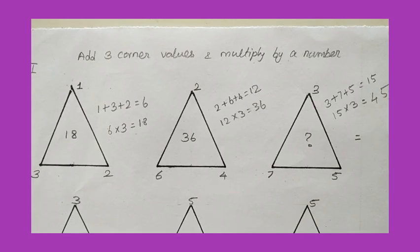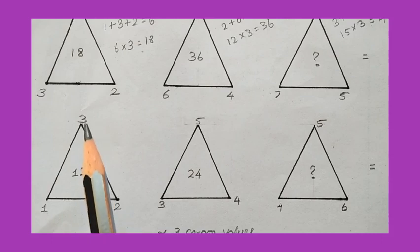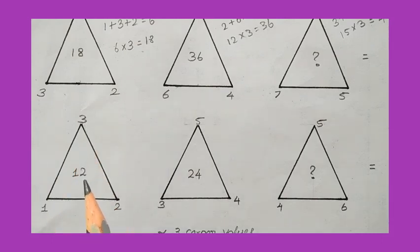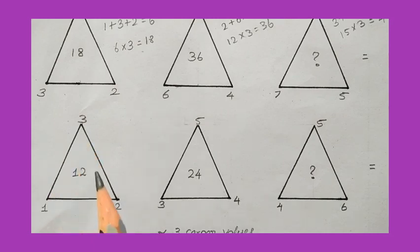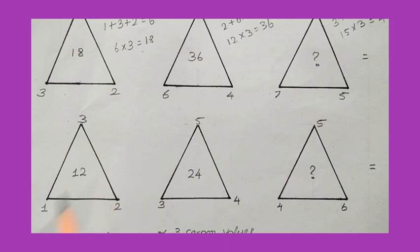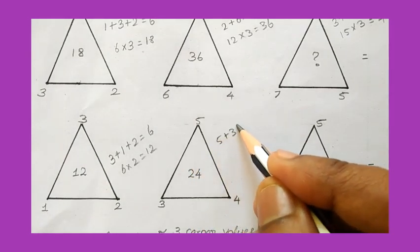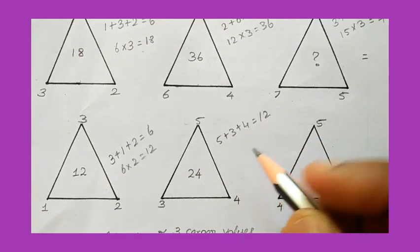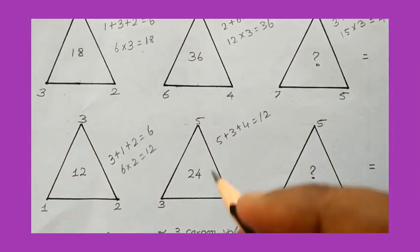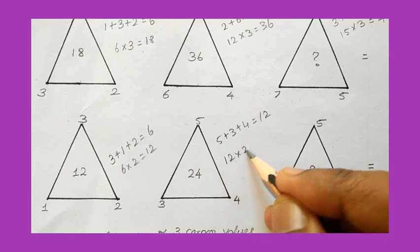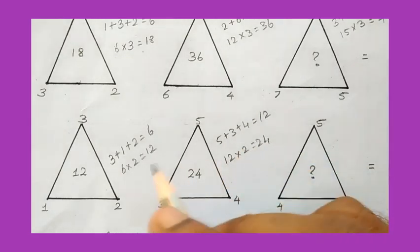Let's do one more example under Type 1. Here the corner values are 1 plus 3 plus 2, totaling 6. The value 6 is related to the inside value 12 by multiplying by 2. For the second triangle, the corner values are 5 plus 3 plus 4, which equals 12. Multiplying 12 by 2 gives 24. The same logic works for both triangles.